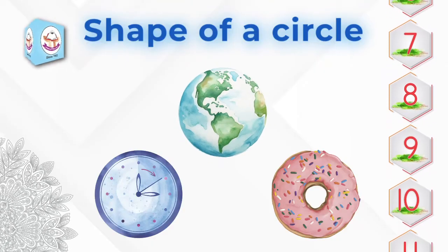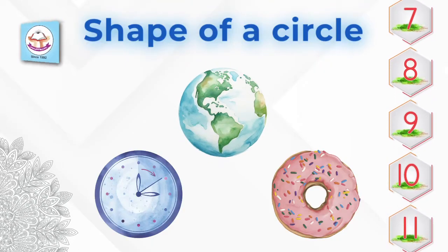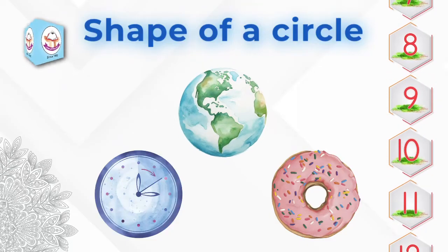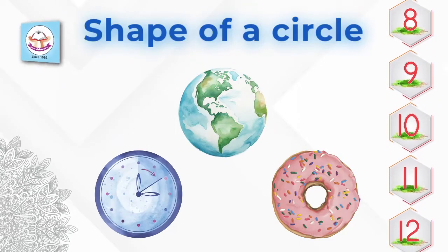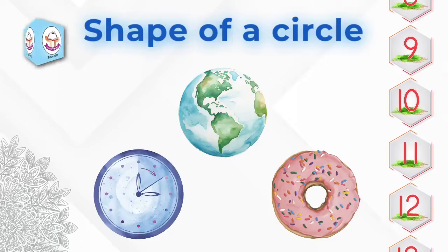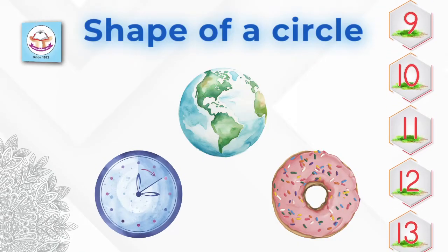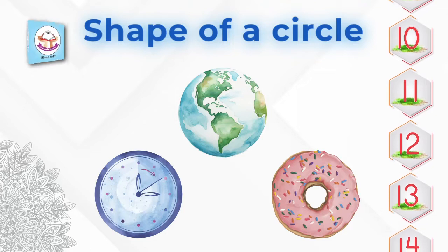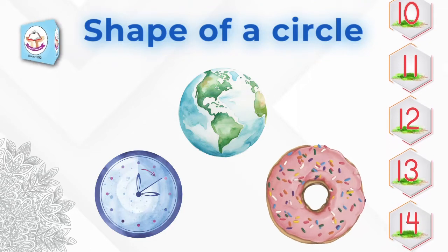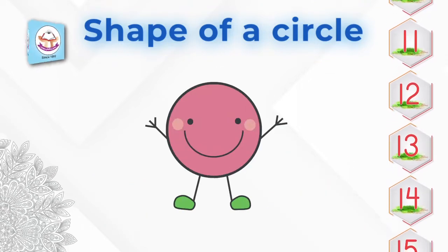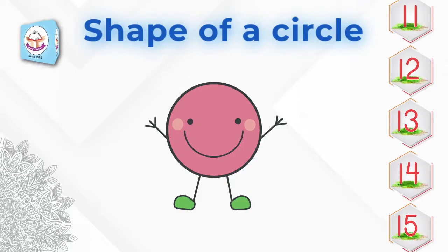Look at the world - the shape of the world is circle. Look at the clock - the shape of the clock is circle. Look at this yummy donut - the shape of this donut is a circle. And look at this cutie, he's saying...